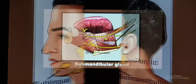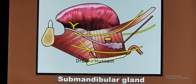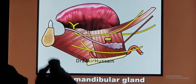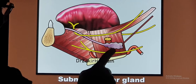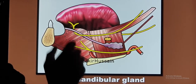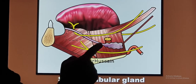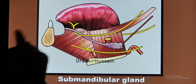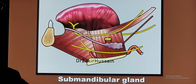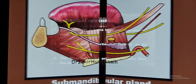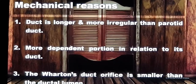There are also mechanical reasons. The submandibular gland sits at a lower level while its duct opens at a higher level, and both the gland and duct are under higher pressure. The duct has a longer, more tortuous course, and the orifice — the opening of the duct — is narrower than the duct itself. These are the mechanical reasons for more calculus formation in the submandibular gland.